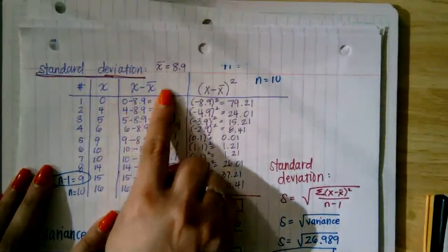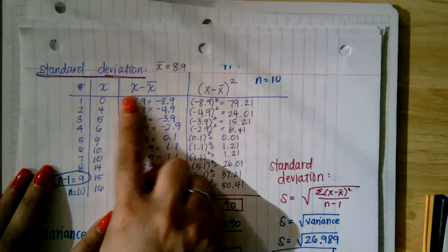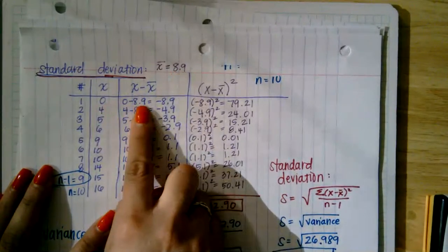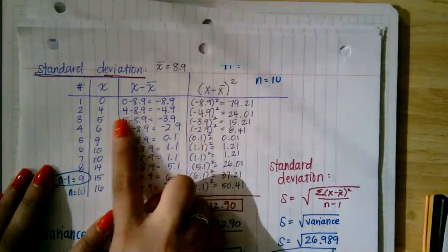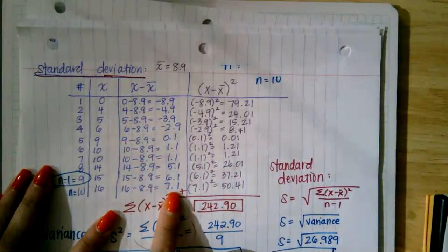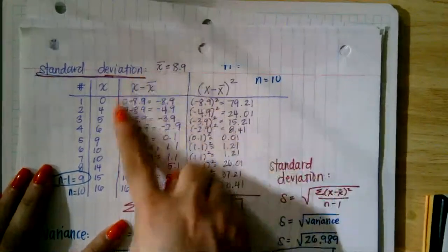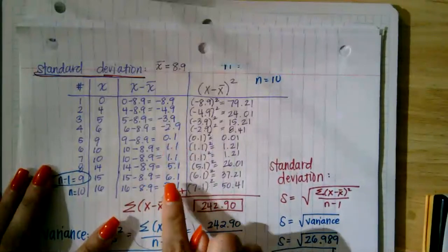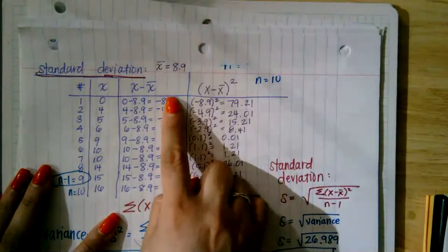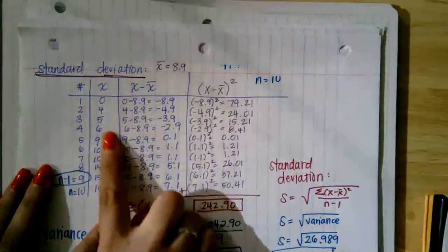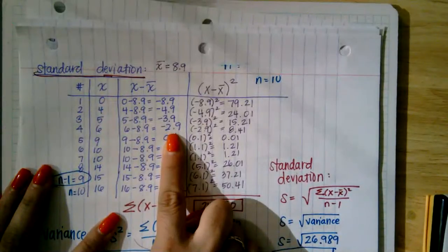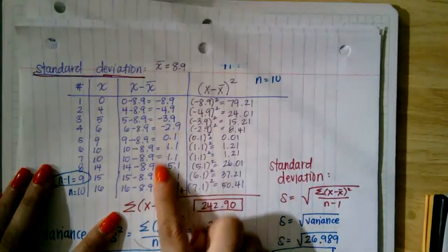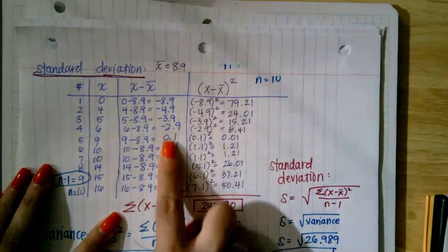This column analyzes the difference each data point is from the mean. I take each data point and subtract 8.9 from it — for example, zero minus 8.9 gives negative 8.9. This column tells me two things: how far each data point is from the mean, and the direction. Four values below the mean show a negative distance; six values above the mean show a positive distance.